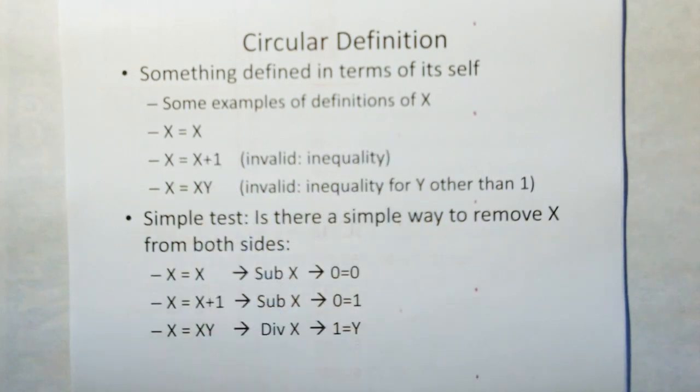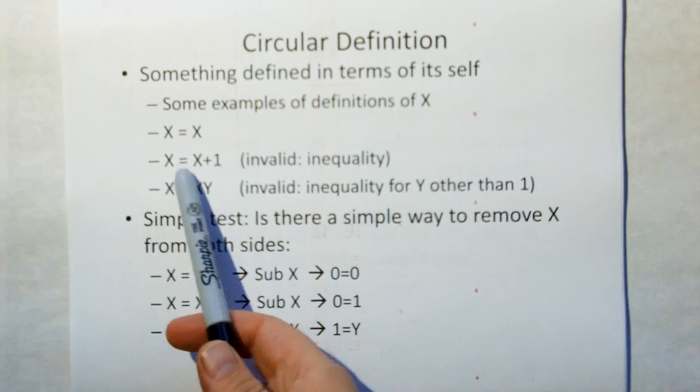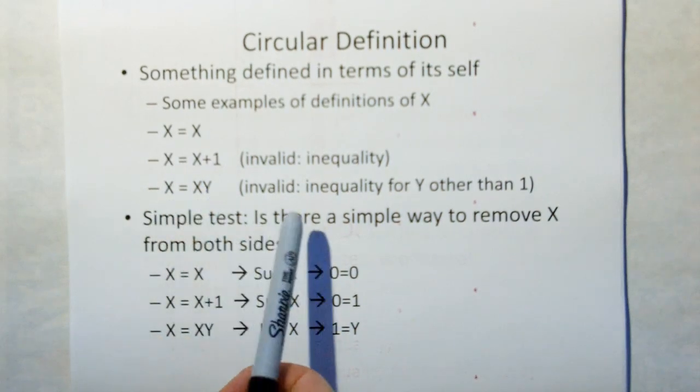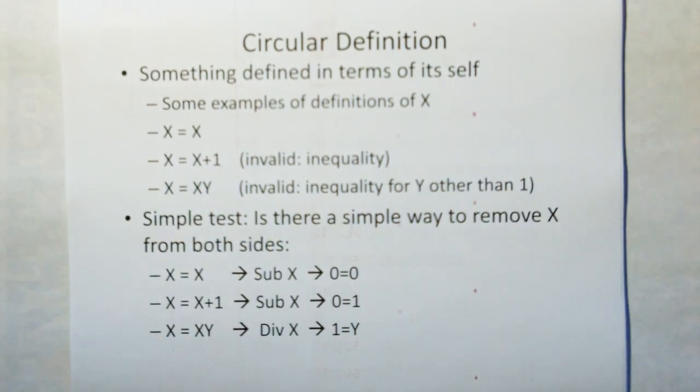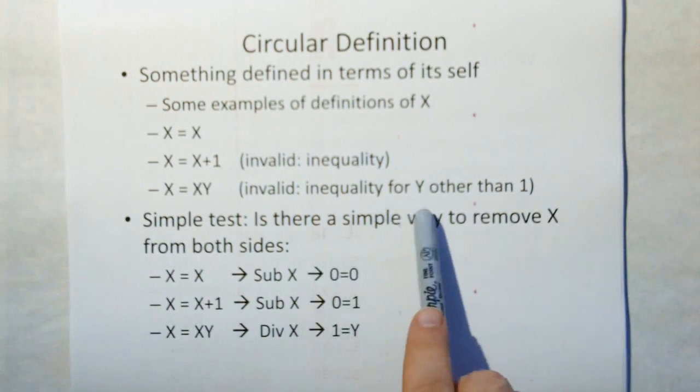That's the same thing as defining X as X equal to X. Even X equals X plus 1, that can't happen because that would be an inequality. Or X equals X times Y, also an inequality for any value other than Y, or for Y other than 1.